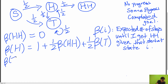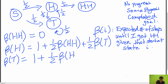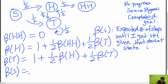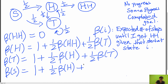Similarly, we can write beta of T. If we're at the tails state, we flip a coin. We have a half chance of getting to the heads state — so one-half times beta of H — and a half chance of going back to the tails state — so one-half times beta of T. And finally, beta of S: we flip a coin, with a half chance of going to the heads state (taking beta of H steps) and a half chance going to the tails state (taking beta of T steps).